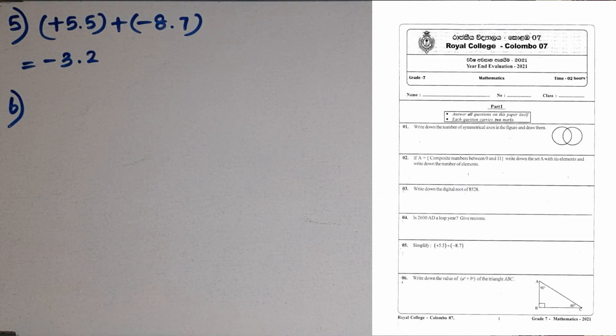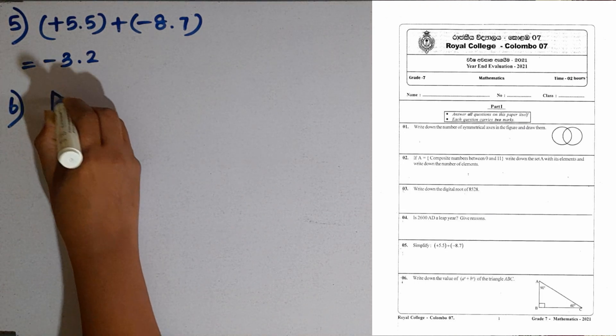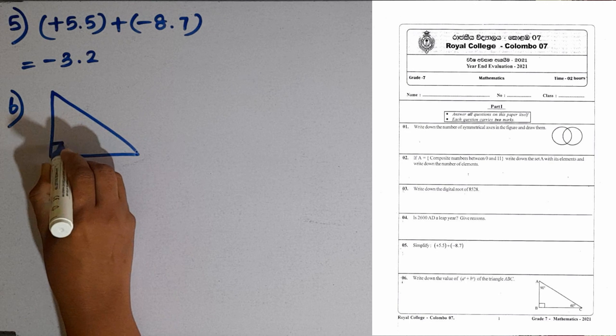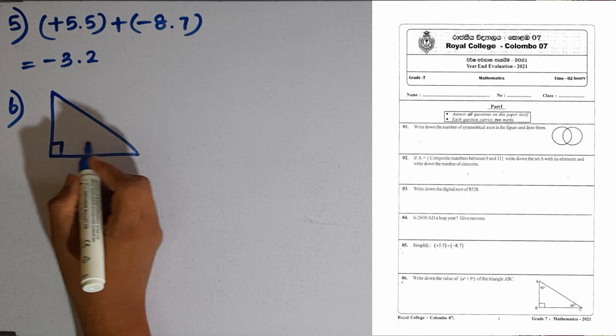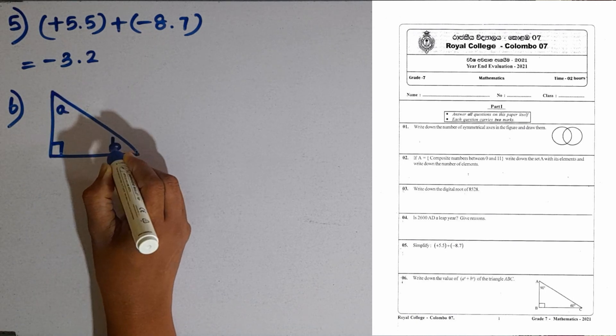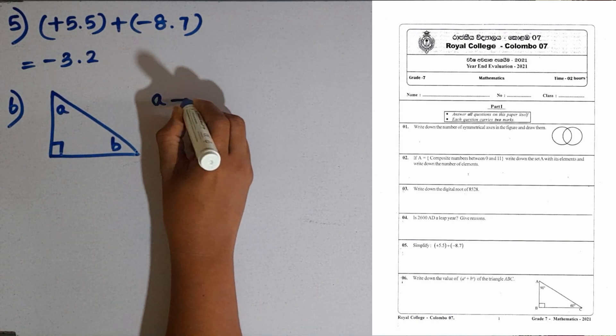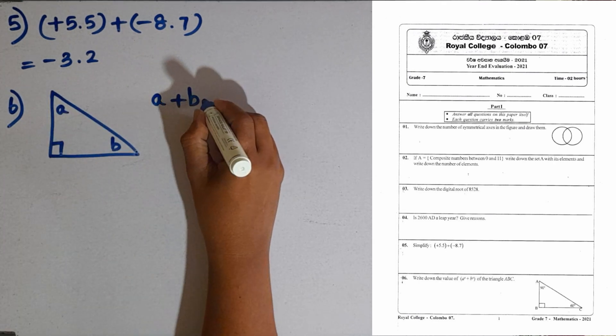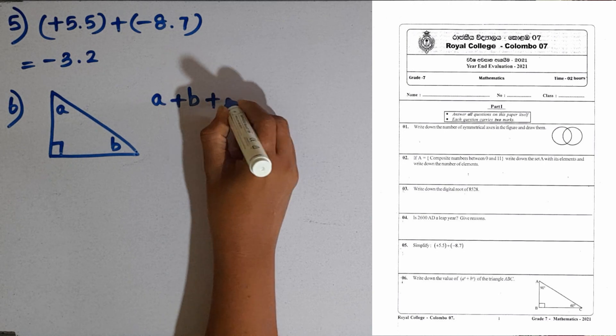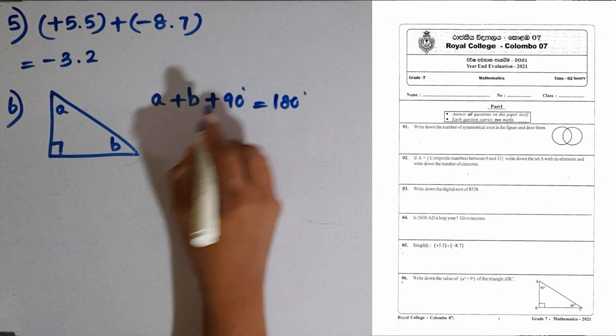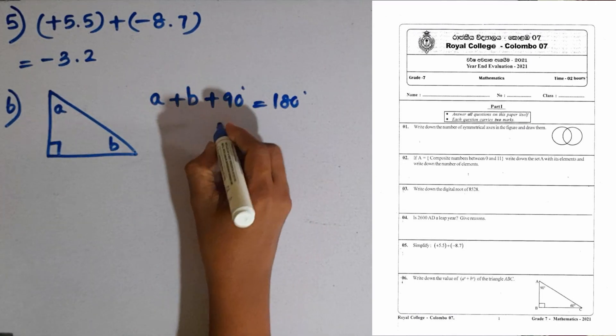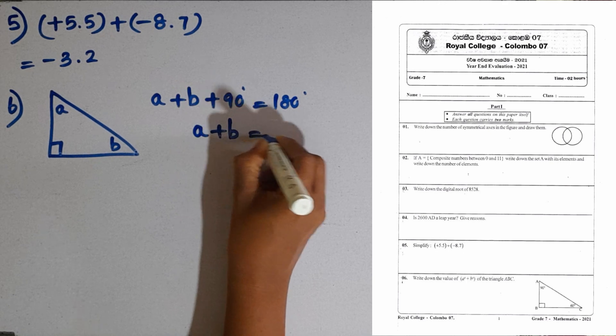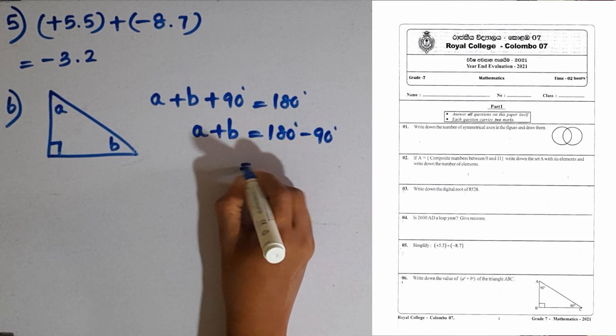Then question number 6. Write down the value of A plus B of the triangle A, B, C. There is a small mistake in this triangle given here. This is a right triangle. We will take this angle as A and this one as B. So, we know that the sum of the three interior angles of the triangle is 180 degrees. The sum A plus B plus 90 is 180. A plus B equal to 180 minus 90. That is 90 degrees.